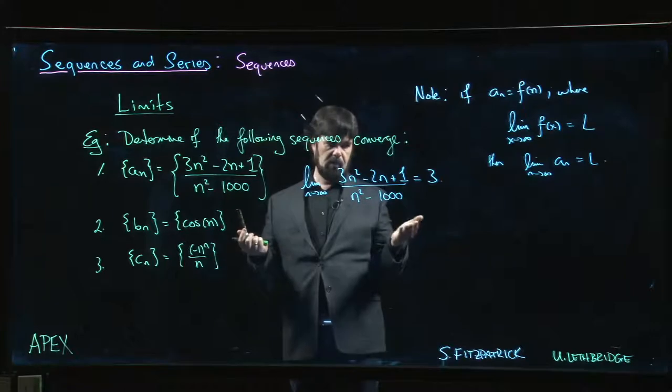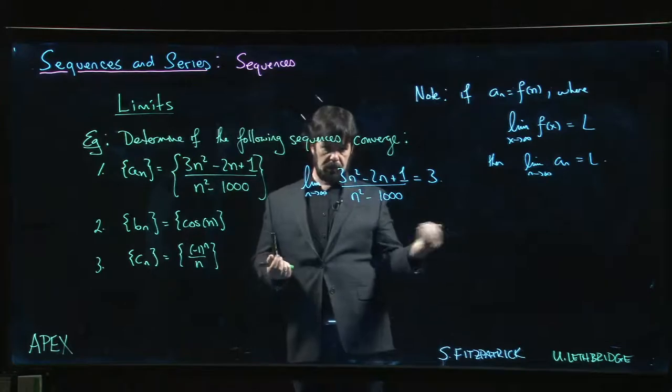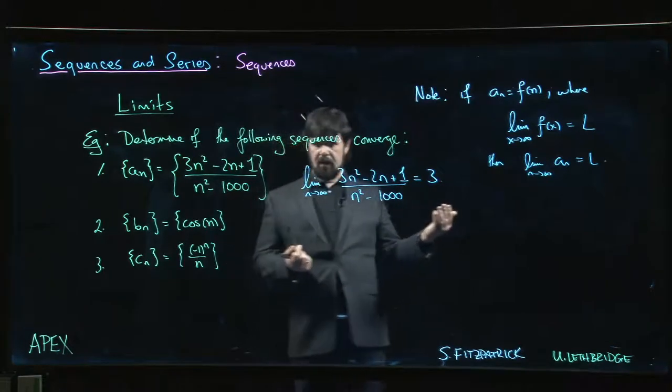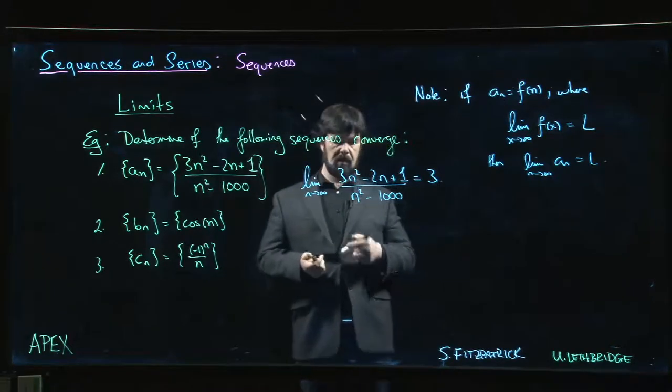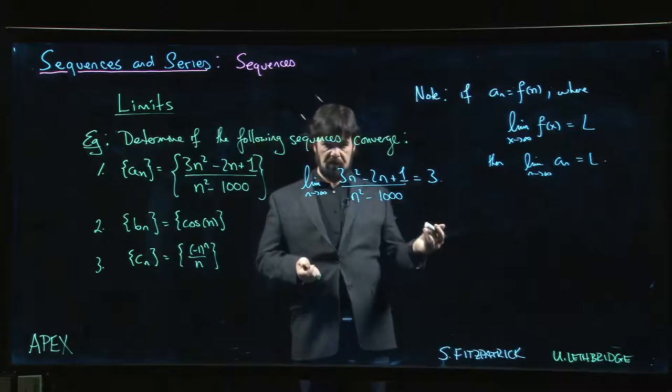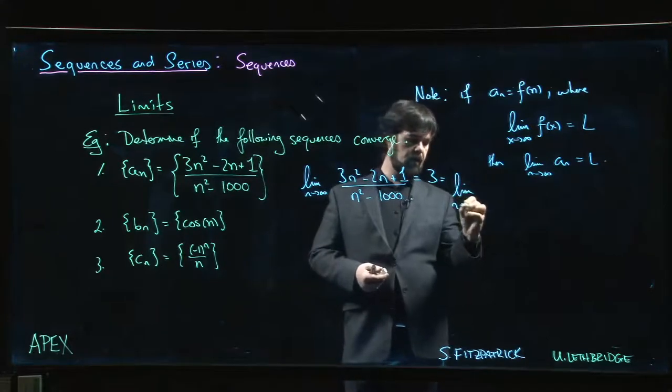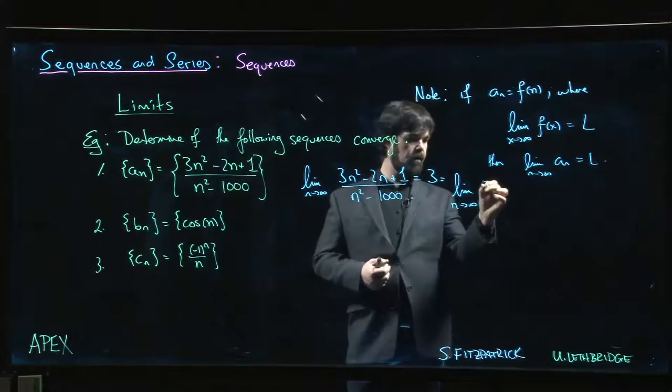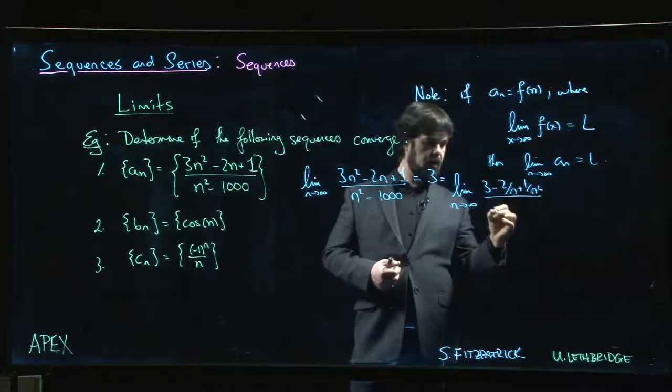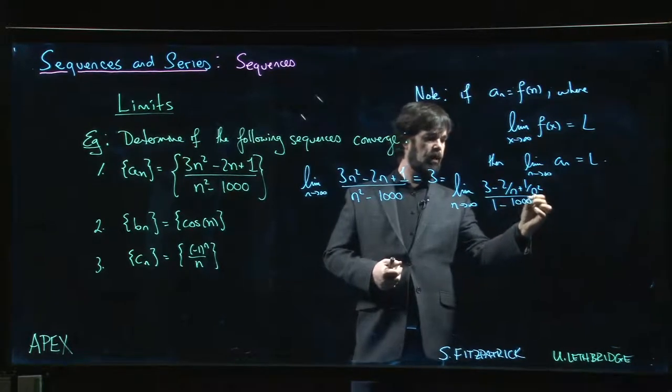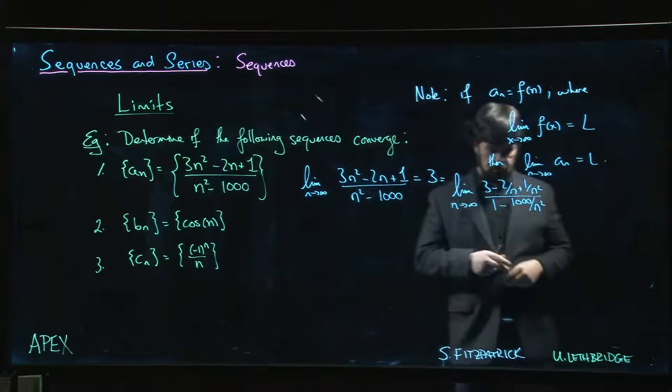That's simple enough. You should say something—why is it 3? Because it's the same degree top and bottom, that's a rule we learn. If you feel like that's too easy and you want to show a little bit of work, you could always do that same trick we did with the real variable—divide everything by n². So you could write this as the limit n going to infinity of (3 - 2/n + 1/n²)/(1 - 1000/n²).